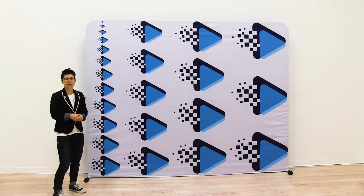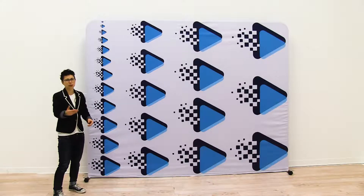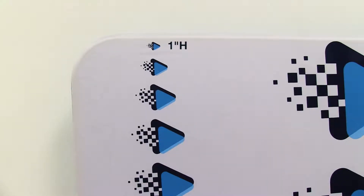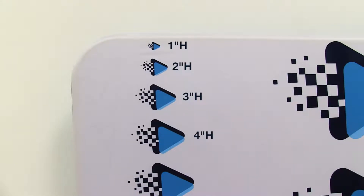We'll start at 3 feet. We are now 3 feet away from our display and as you can see at the very top that logo is 1 inch high, the one below it is 2 inches high, 3 inches high, 4 inches high. So from 3 feet away, this is what the logos look like.